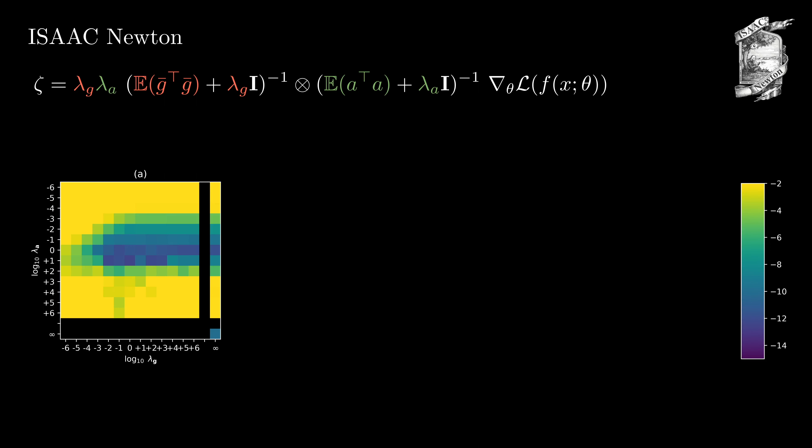What we observe in this plot is that we can almost arbitrarily increase lambda g, that is go to the right, without a real loss in performance. Based on this observation, we can also look at lambda g equal to infinity and observe that we lose almost no model performance during this step.